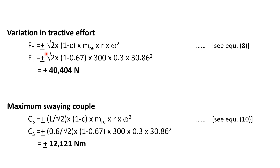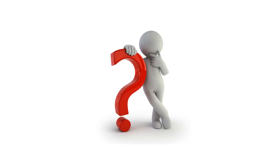Variation of tractive effort (Equation 8): ±√2 × (1 − c) × m_re × r × ω² = ±√2 × (1/3) × 300 × 0.3 × 30.86² = ±40,404 N. Maximum swaying couple (Equation 10): (L/√2) × (1 − c) × m_re × r × ω² = (0.6/√2) × (1/3) × 300 × 0.3 × 30.86² ≈ 12,121 N·m. This concludes the solution for locomotive engine balancing.